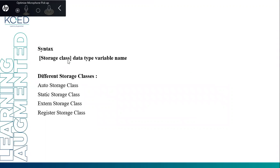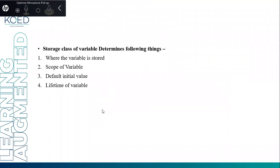We have a syntax for the storage class: storage class followed by the data type and variable name. The different storage classes are: auto storage class, static storage class, extern storage class, and the register storage class.